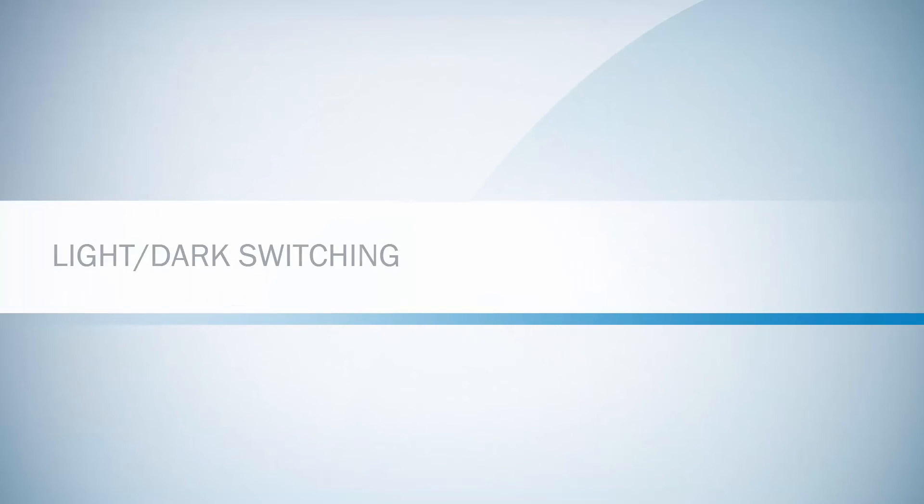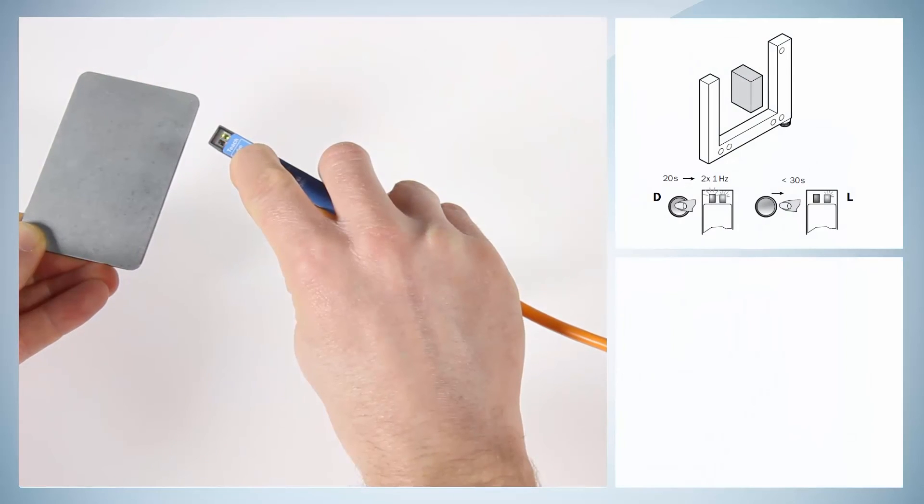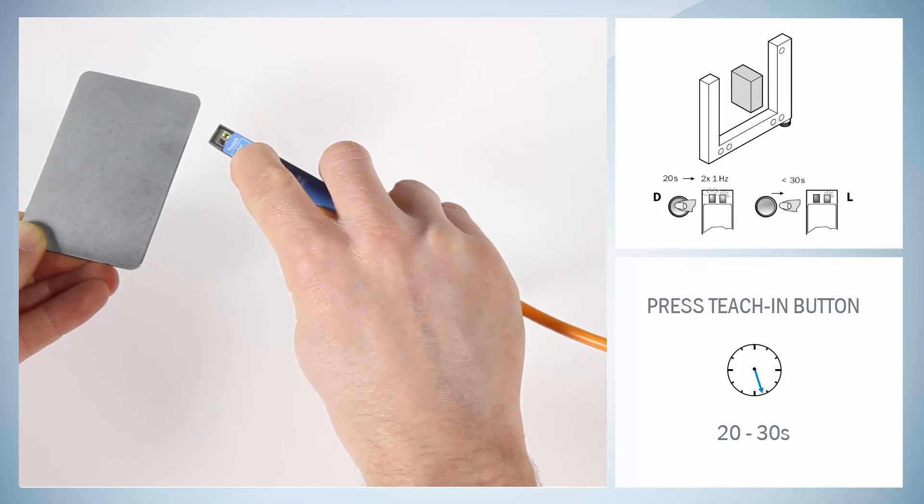Light-Dark switching: It is possible to change between light switching and dark switching by pressing the Teach-In button for 20 to 30 seconds.